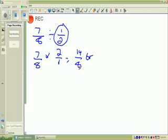Or, you can put that into a mixed number, and 8 goes into 14 one time, and your remainder is 6 over 8.